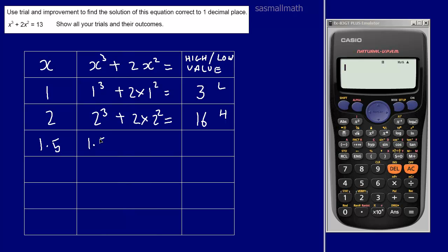1.5 cubed plus two times 1.5 squared, and we're going to need the calculator now. 1.5 cubed, and we add to that two times 1.5 squared, and it tends to bring up a fraction on this one. I know we can set the mode differently, but I find it easy just to press the SD button and we're back to a decimal. 7.875, and that's low.